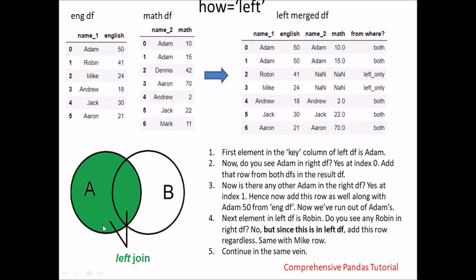Next we look at left join. It includes all elements either exclusively in A or common to both A and B. So Adam 50, Adam 10, then Adam 50, Adam 15 — Adam is present in both. Mike is not present in the right but we include Mike 24 since it is in the left data frame. Robin is also only in the left so we include it. Andrew, Jack, Aaron are present in both — included as before. Dennis and Mark are present only in the right, so we do not include them in the left join output.